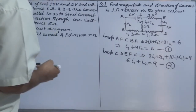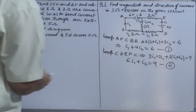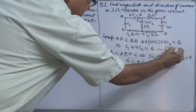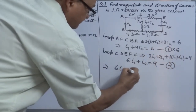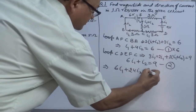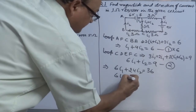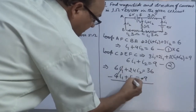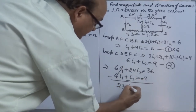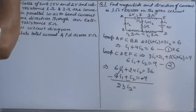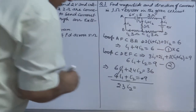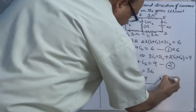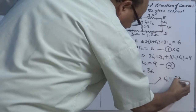Do anything — either multiply equation 1 by 4, or equation 2 by 6, then subtract. Multiplying equation 1 by 6: 6I1 + 24I2 = 36. Second equation: 6I1 + I2 = 9. Subtract — I1 cancels. 23I2 = 27, so I2 = 27/23.